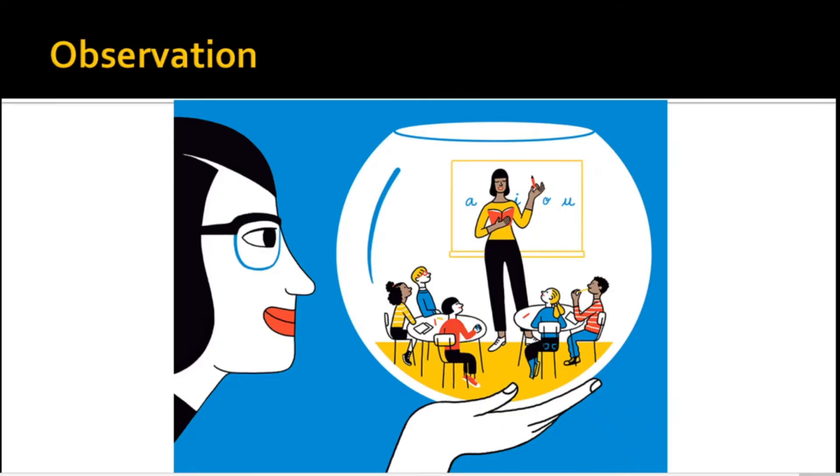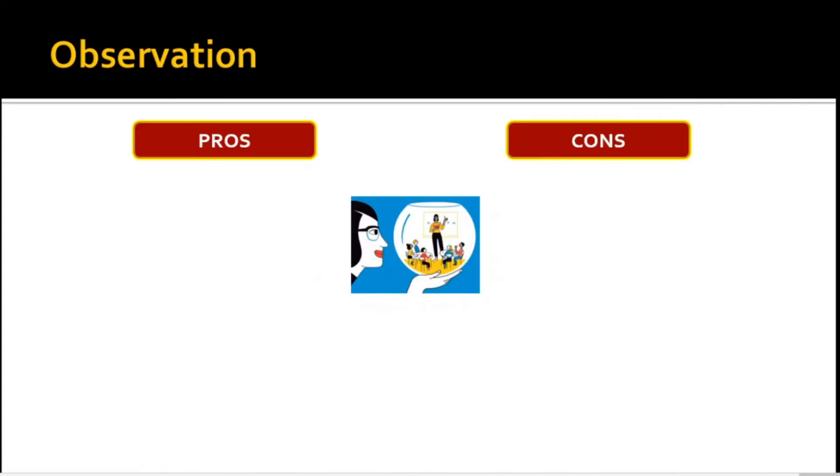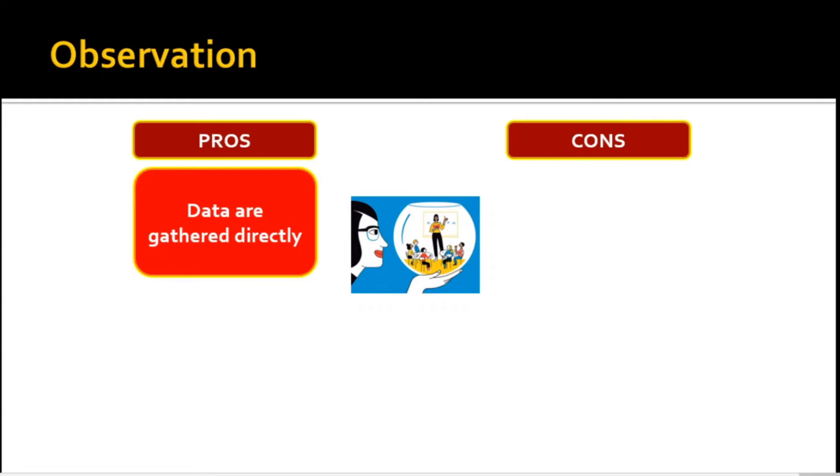Observation is another data collection method best suited for documenting the behaviors of a subject in an uncontrolled environment or controlled environment as for the case of laboratories. Through observation, the researcher examines a phenomenon while it occurs. One advantage of observation includes the directness of the data gathering process.